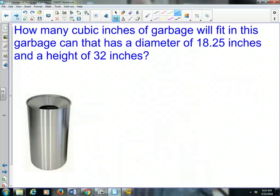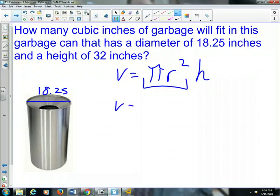So on this first one, how many cubic inches of garbage will fit into this garbage can? This garbage can is a perfect cylinder, isn't it? It has a diameter right here of 18.25, so we'll need that to find the radius. The volume equals the area of the base, which is pi r squared, that's the area of the base, multiplied by the height. So the volume equals pi radius squared times the height, and the height is 32 inches. What is the radius? It's half of 18.25, right? Half of 18.25 is 9.125.